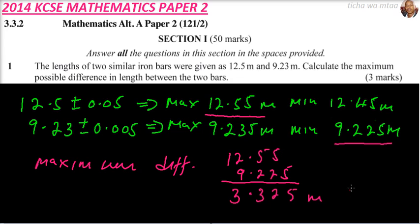During an exam, you don't need to write all the content that I have written here. You can just write the maximum 12.55 minus the minimum 9.225 and you get the difference. You will be able to get the answer. Otherwise, this is just revision, so it is important to understand. This question is from approximation and errors, which you learned in form 3.